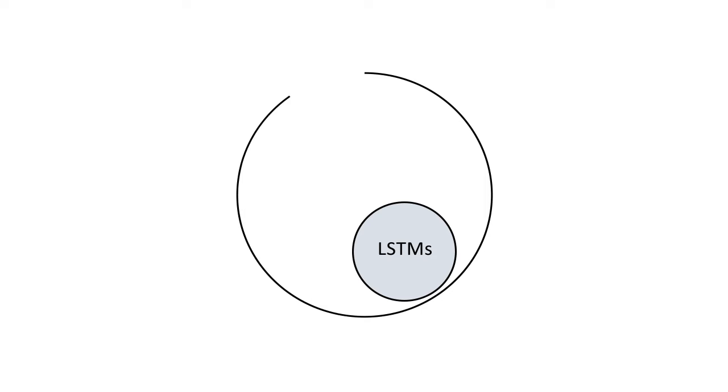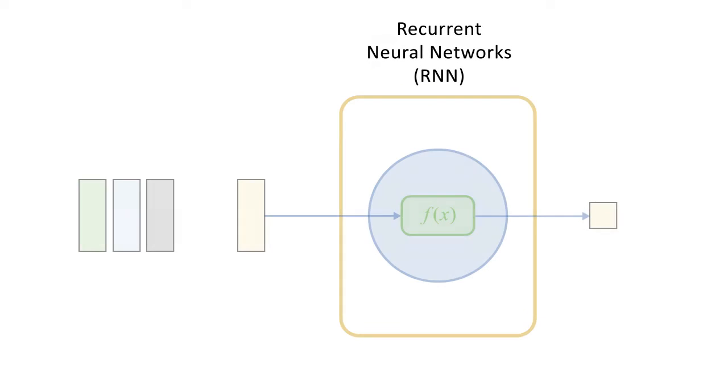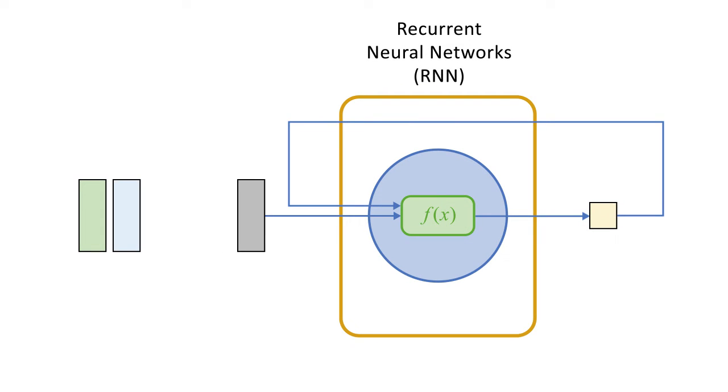LSTMs are a type of recurrent network, which are networks that reuse the output from a previous step as an input for the next step. Like all neural networks, the node performs a calculation using the inputs and returns an output value.